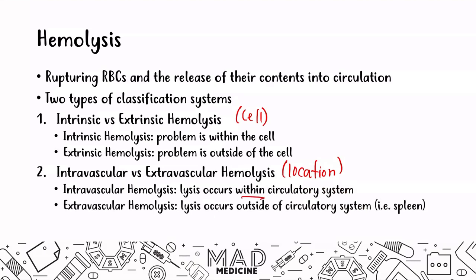Extravascular lysis primarily occurs in the spleen — that's one of the main places it occurs and something you need to know. One important thing to understand is that intracellular problems happening within the cell are going to lead to extravascular hemolysis, whereas issues occurring outside of the cell — extrinsic hemolysis — are going to be due to intravascular hemolysis. So they are actually opposite, and it's very easy to get them mixed up. Spend a little time on this: intrinsic and extrinsic hemolysis are opposite of intravascular and extravascular hemolysis.